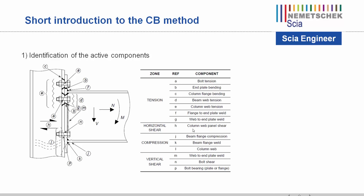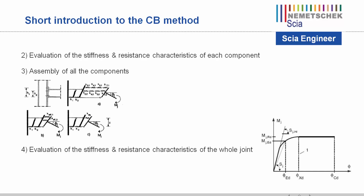All these active components will be identified and checked by SIA Engineer. The next step is to evaluate the stiffness and resistance characteristics of each component, because all basic components contribute to the whole stiffness of the joint. These components are then assembled into an equivalent stiffness of the joint, replacing multiple components with a single equivalent stiffness component.